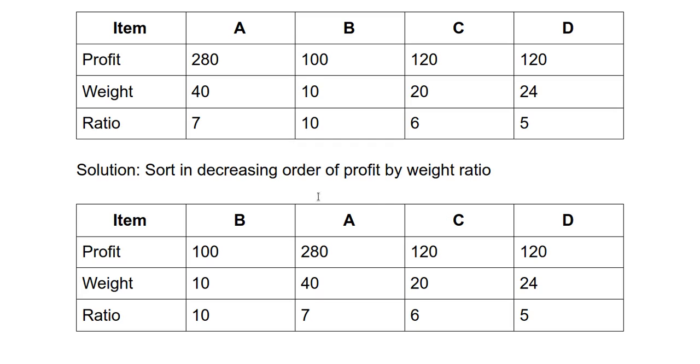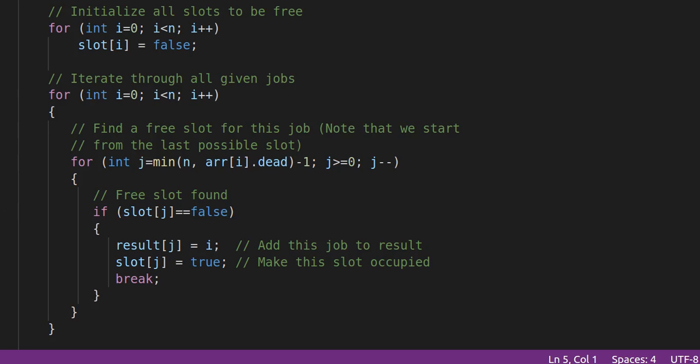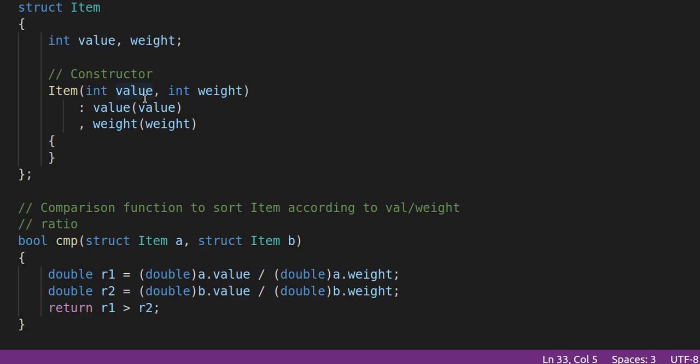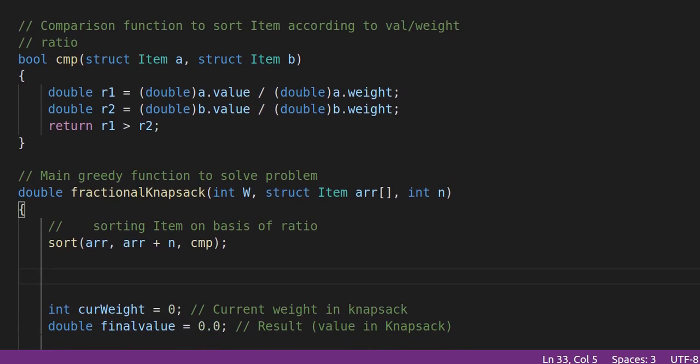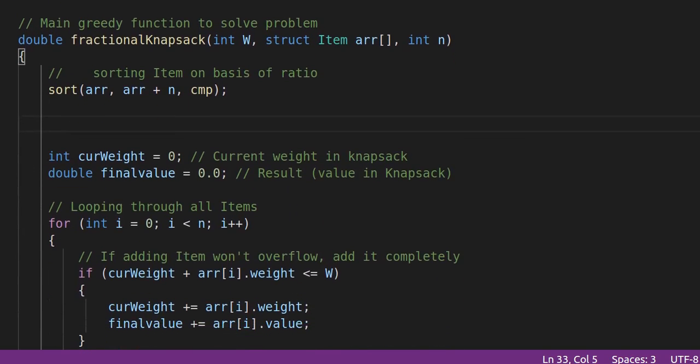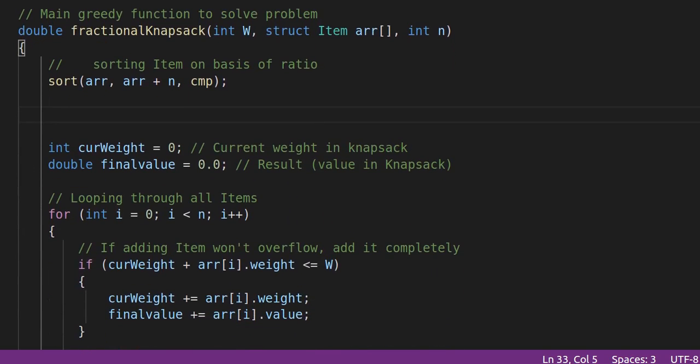Now let us look at the code for this problem. We define a structure item to represent each item which has a value and a weight. The cmp function is used to sort the items according to value by weight ratio. The fractional knapsack function is the main function which will be using the greedy approach.